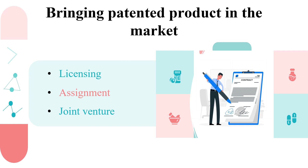The first option is patent licensing, wherein the patent holder transfers patent rights to a third party for a specific period of time without transferring ownership of the patent. The second way is patent assignment, wherein the patent holder permanently transfers ownership of his patent to a third party, and that third party becomes owner of the patent. The third way is a joint venture, wherein both the patent holder and third party join hands to build and establish a new venture in collaboration.